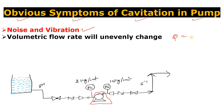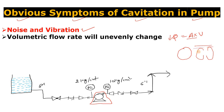Q is equal to area multiplied by velocity. The area for the pump is constant. As there is bubble formation due to cavitation, the bubbles reduce the effective area, so the volumetric flow rate Q will be reduced. When the bubble collapses, the area becomes available again and Q increases. So as bubbles form, Q reduces, and as bubbles collapse, Q increases — that is why the volumetric flow rate unevenly changes. This is a very important symptom to check if you suspect cavitation.